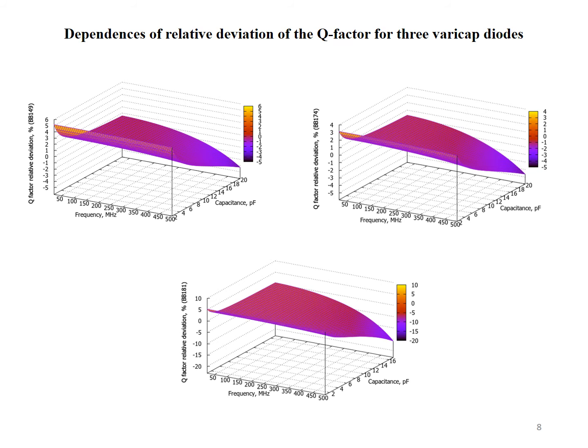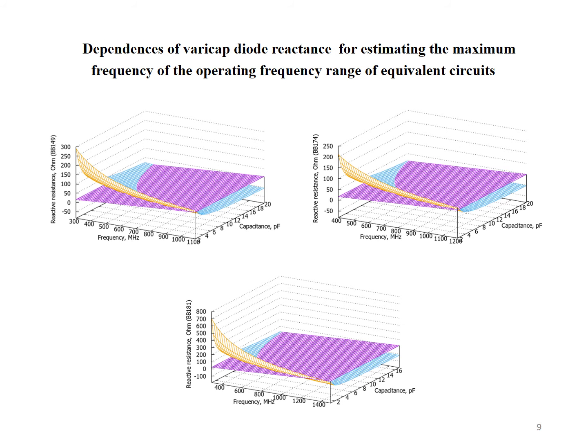Slide 8 illustrates the dependency of the relative deviation of the Q-factor for three varicap diodes. Slide 9 shows dependencies of the varicap diode reactance for estimating the maximum frequency of the operating frequency range of equivalent circuits.